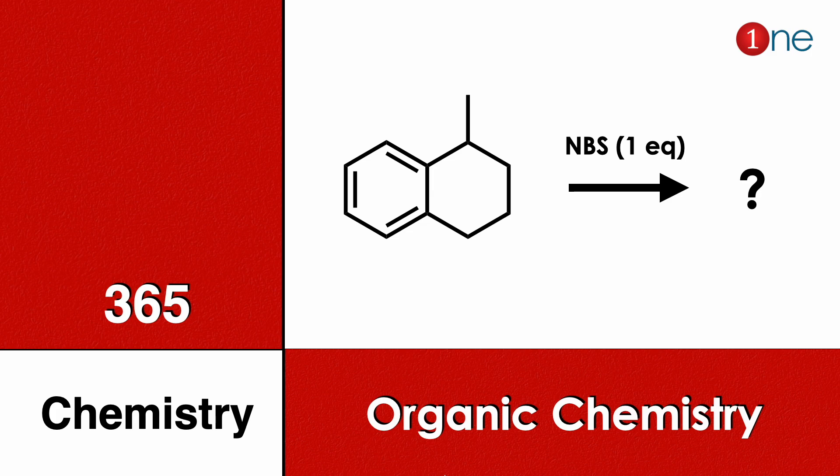Welcome to One Chemistry. This is the 365 Chemistry series of organic chemistry questions. Here you have benzene attached with a fused hexane system with a methyl group at the alpha position, and you are using NBS in one equivalent. You should find what the final product will be.